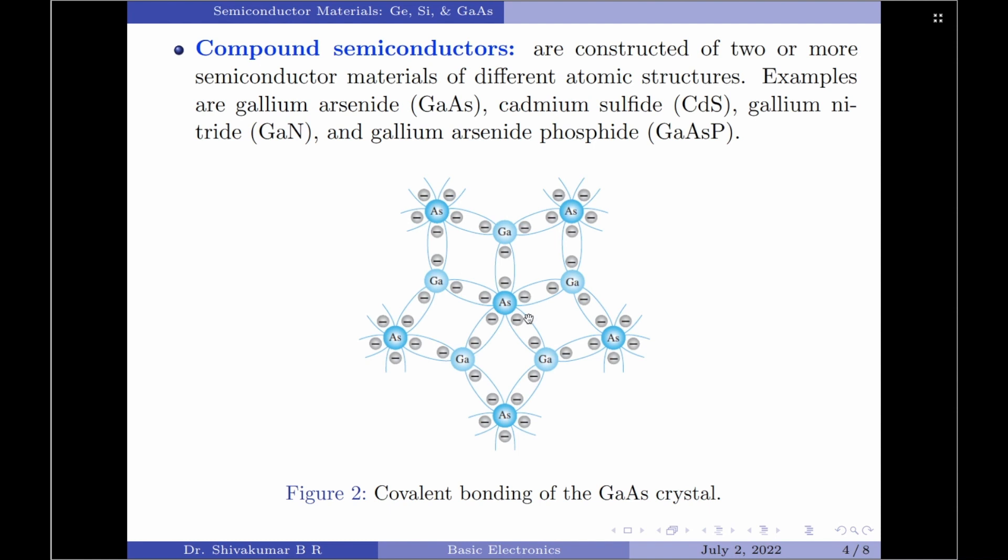An example covalent bonding diagram is shown in figure two here. If you look at this diagram very closely, you will note that we have gallium as well as arsenide. So, this is a compound of two semiconductors and hence the name compound semiconductors.